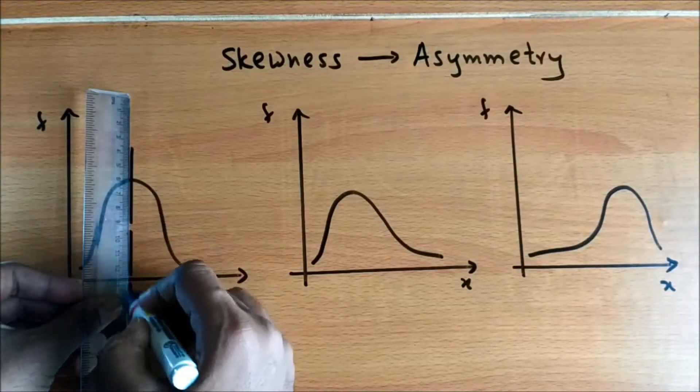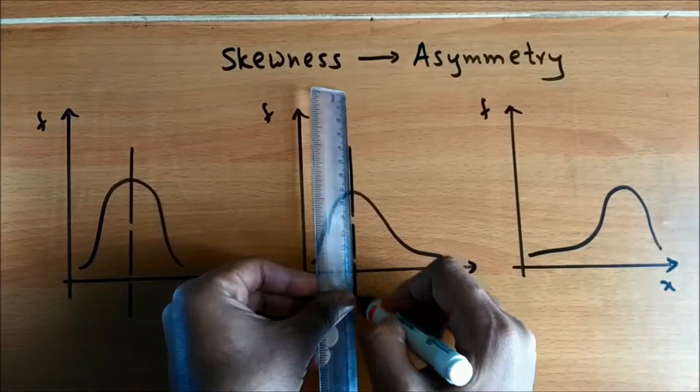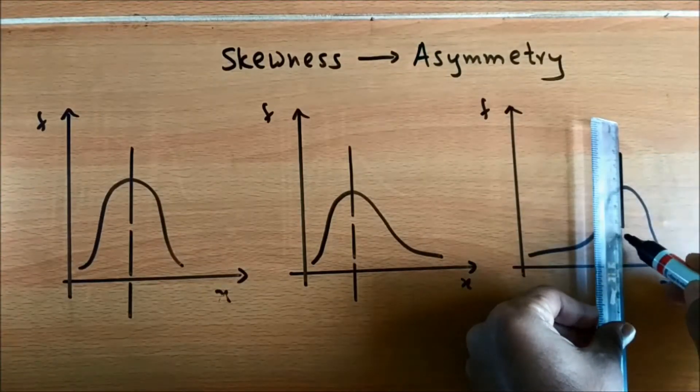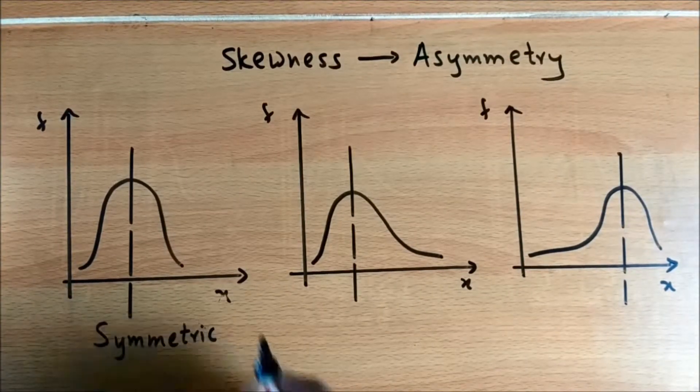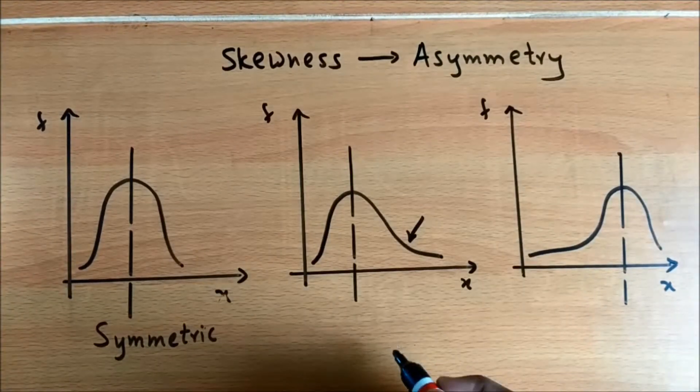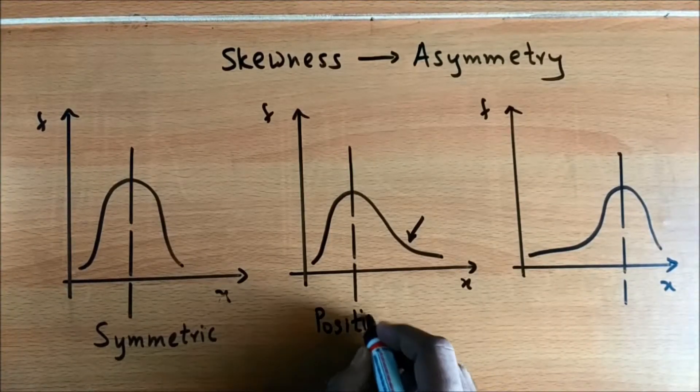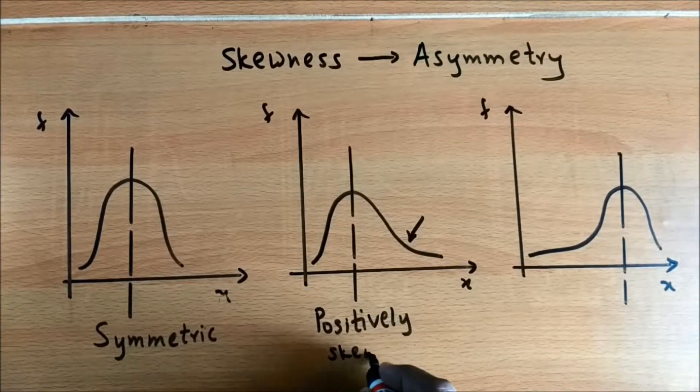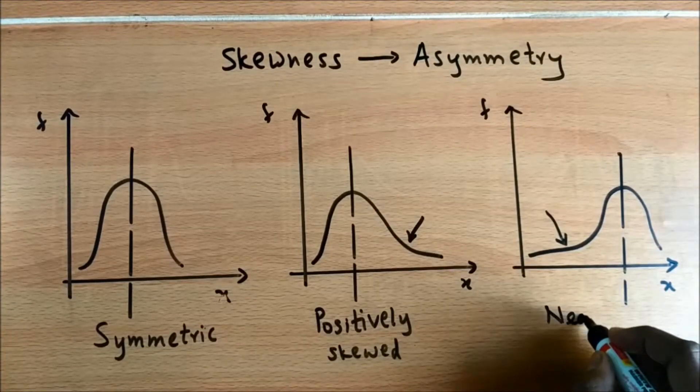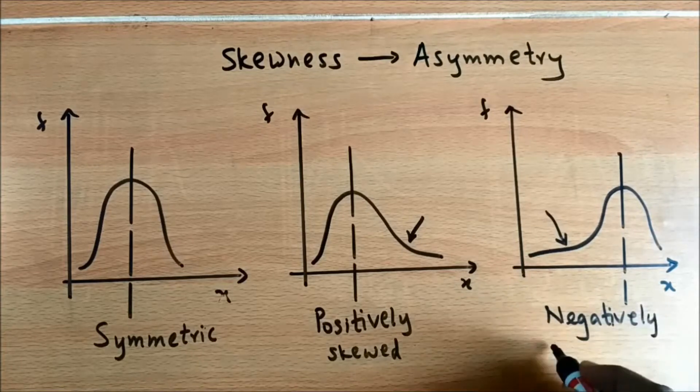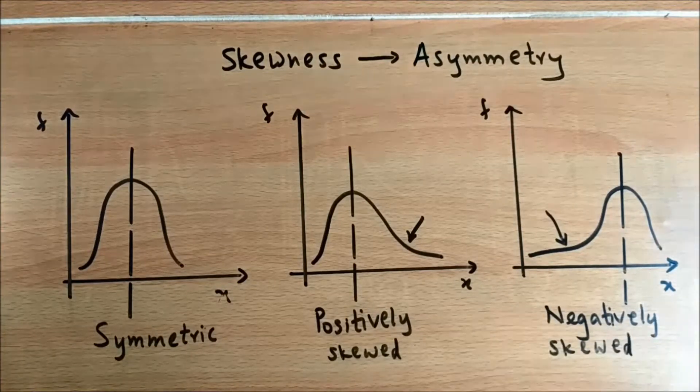Now let me draw three frequency curves. The first one, then the second, and the third. Now let's draw the axis of symmetry for each of them. So the first, second, and third. Now in the first one you observe both the parts are identical, so it's a symmetrical frequency distribution. The second has a positive tail, so it's positively skewed, it's asymmetric, right? And the last has a negative tail, so it is negatively skewed.